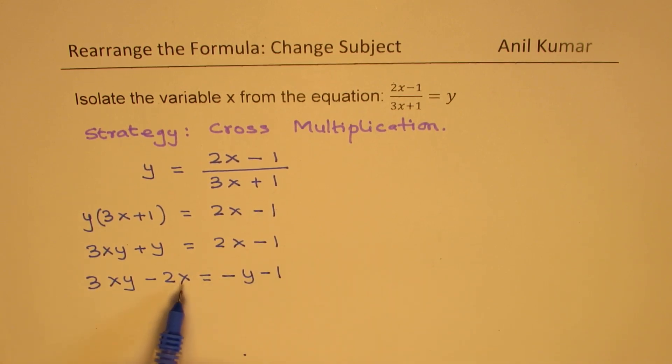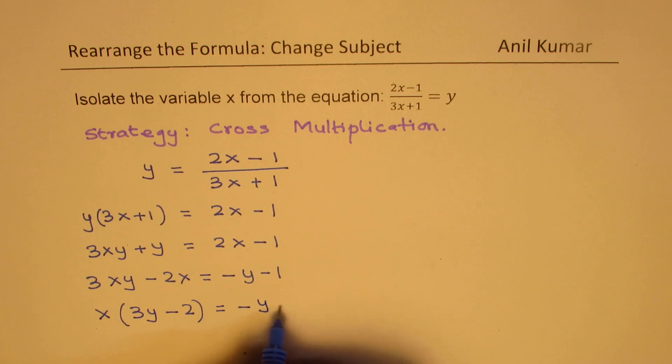Now, we can factor x on the left hand side. So we get x and we could write this as 3y minus 2 equals minus y minus 1. Now you see we have isolated x.